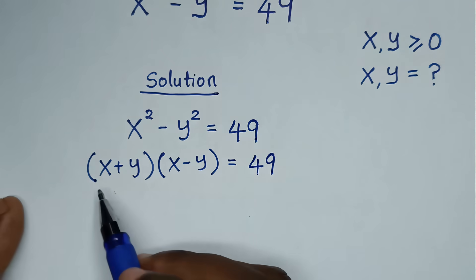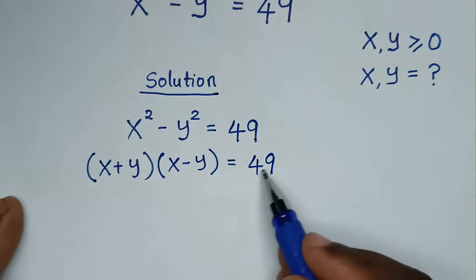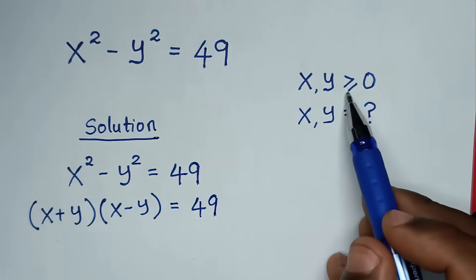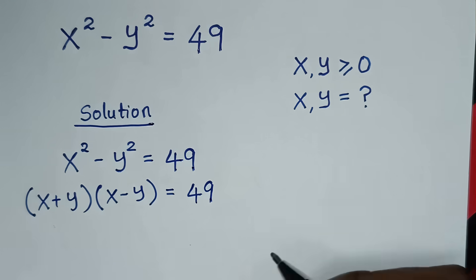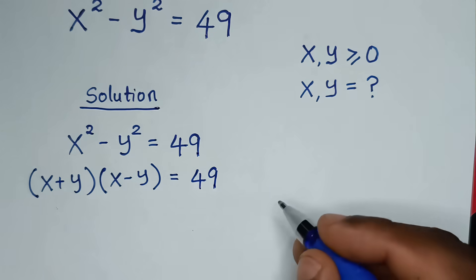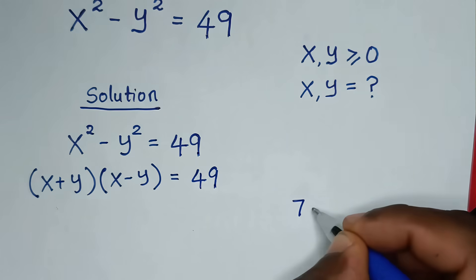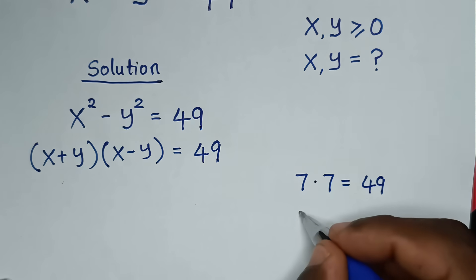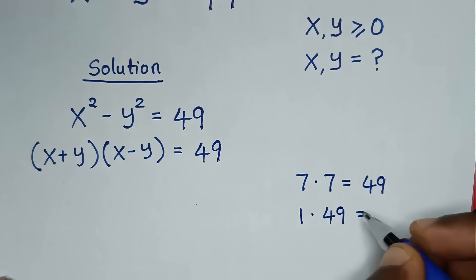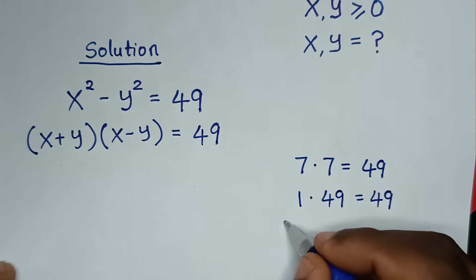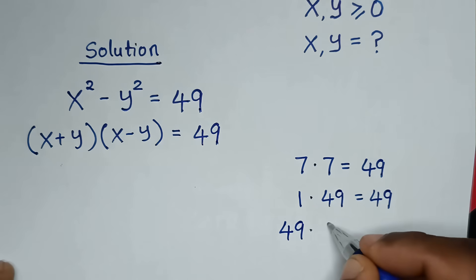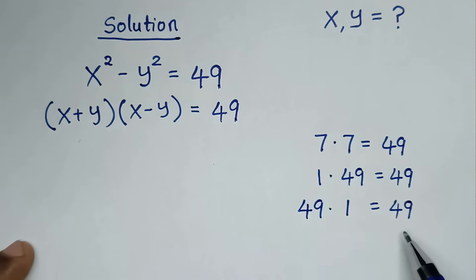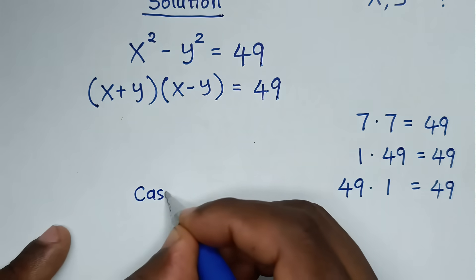In the next step, because here it is multiplication of (x + y) times (x - y) equal to 49, and since x and y are greater than 0, the product should be a positive value. So to get 49, it is either 7 times 7, or 1 times 49, or 49 times 1. Now by using these three cases, let's start with case 1.